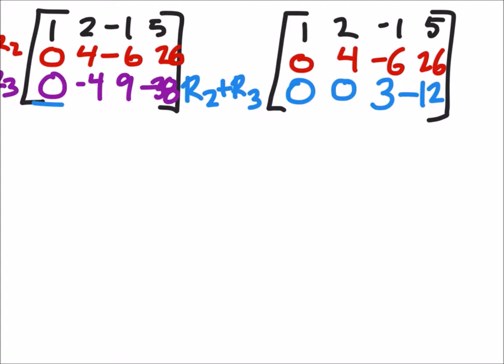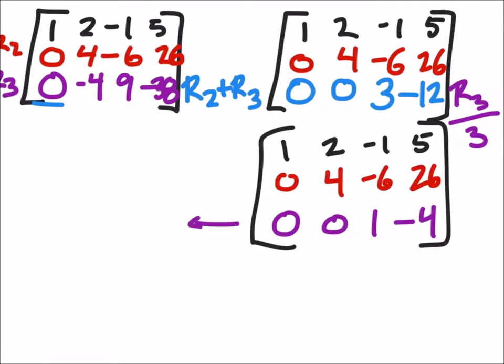Well, and that's pretty easy to solve that third row now, for z specifically. All I've got to do is take row 3 and divide it by 3. And that gives me a new row 3, which would be 0, 0, 1, and negative 4. So, this bottom row right now tells me that z equals negative 4.